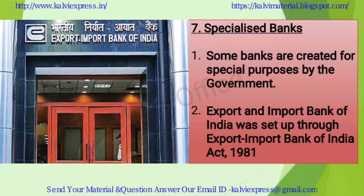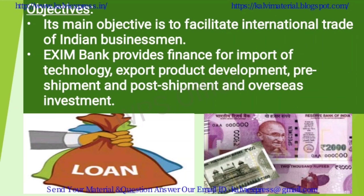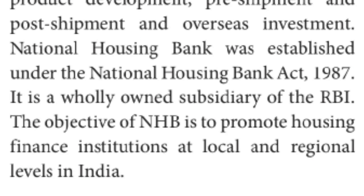The seventh type is Specialized Banks. These are established for a special purpose — in India, for improving international trade. The Export and Import Bank of India (EXIM Bank) was set up under the Export Import Bank of India Act of 1981. Its main objective is to facilitate smooth flow of international trade, financing imports of technology, exports, product development, pre-shipment, post-shipment, and overseas investment.